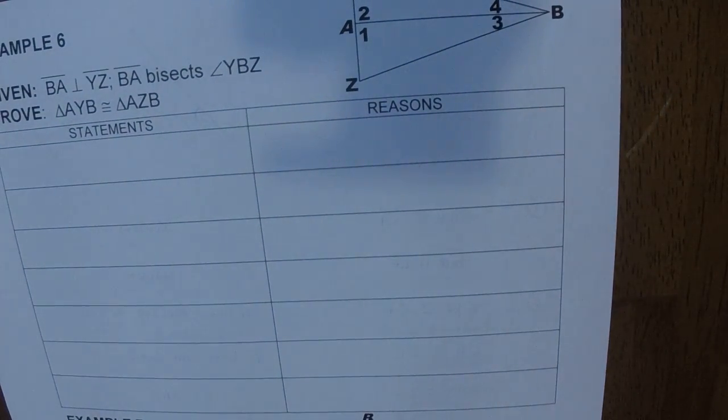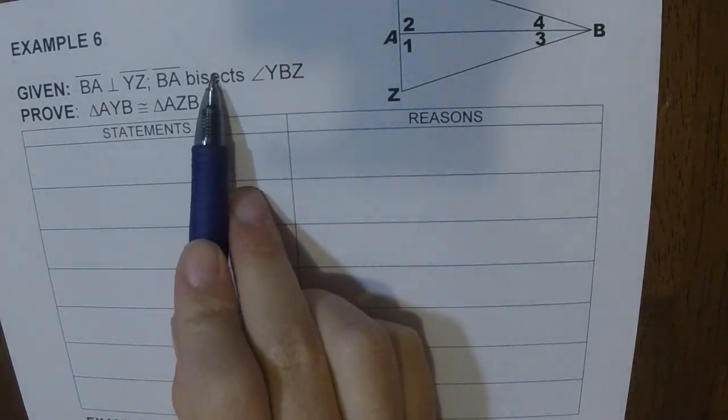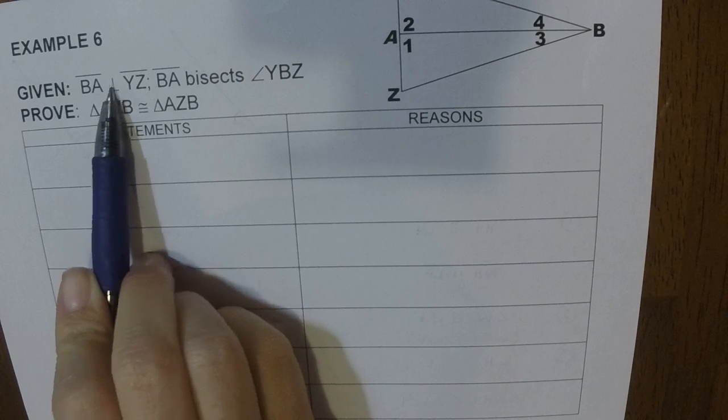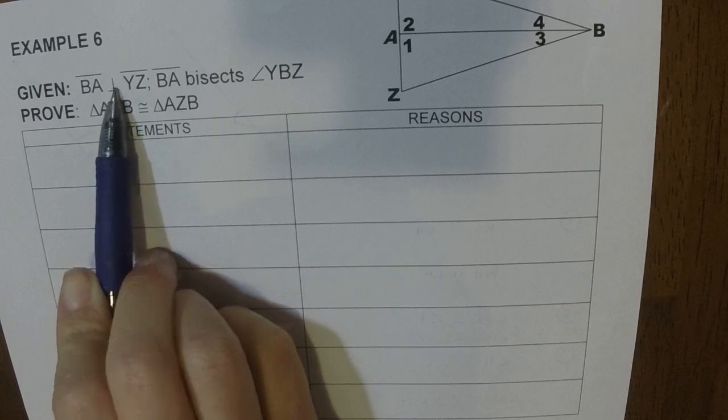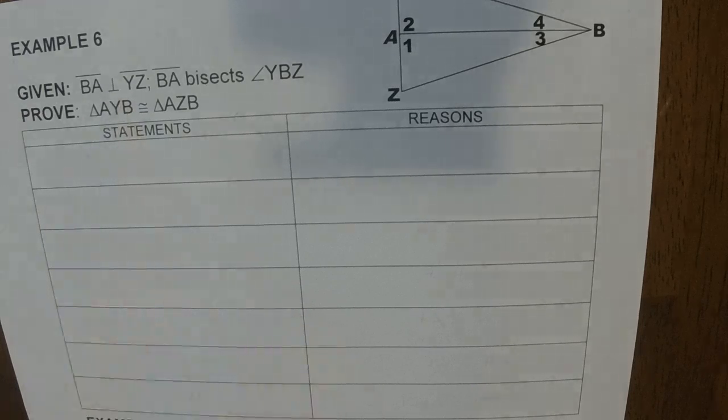So on the back, I want you to try these two on your own. I want you to kind of remember what bisect means about cutting in half. And then remember, perpendicular means that we're going to form right angles. And if we have two angles that are right angles, then they are congruent to each other. So if you struggle to kind of figure this one out, let me know, and I will help you.